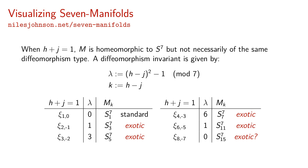The standard seven-sphere is given by C(1,0) and has lambda equal to zero. Exotic seven-spheres are given, for example, by C(2,-1) and C(3,-2). These have lambda equal to one and three respectively and are therefore distinct.